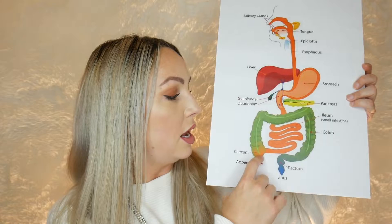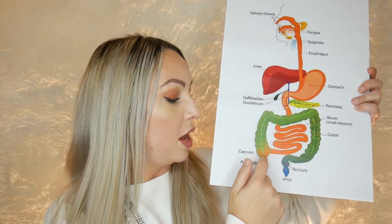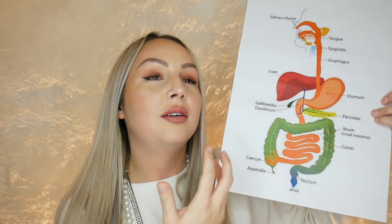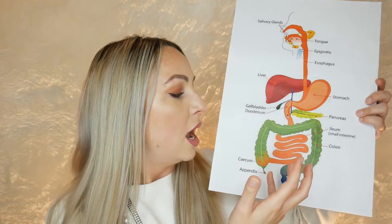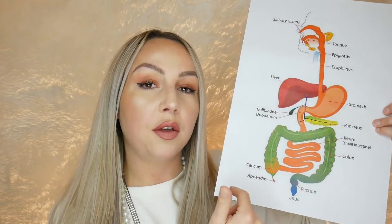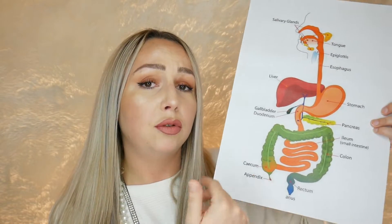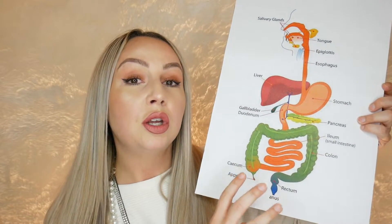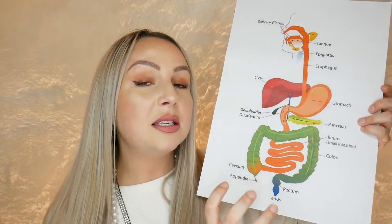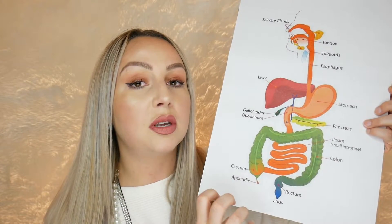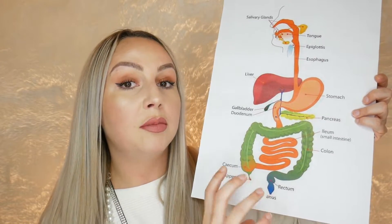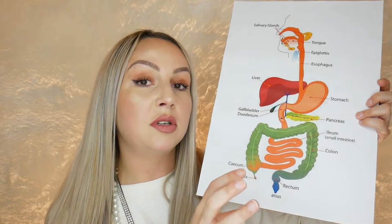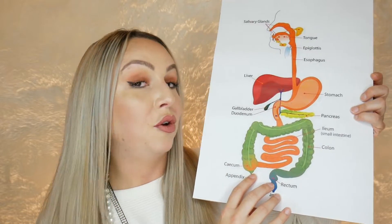Ulcerative colitis, on the other hand, affects the large intestine only — the colon, rectum, and anus. Both conditions share a lot of common areas, so one can be misdiagnosed for the other. Someone diagnosed with ulcerative colitis might actually have Crohn's and vice versa, so it is very important to have the correct diagnosis in order to be treated correctly. A lot of the treatments can vary between the two conditions.